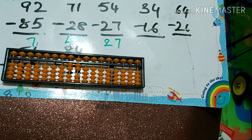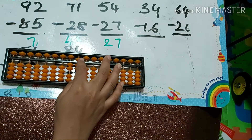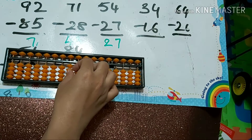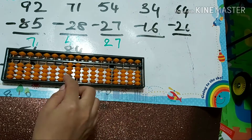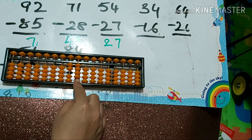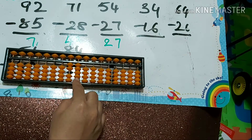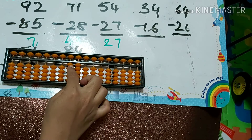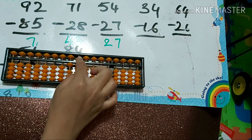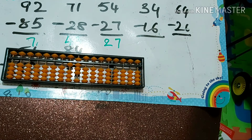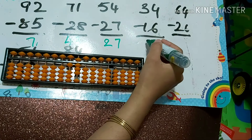Next one: 34 minus 16. Minus 1 directly. How to do minus 6: papa down, mama down, babies down. Answer is 18.